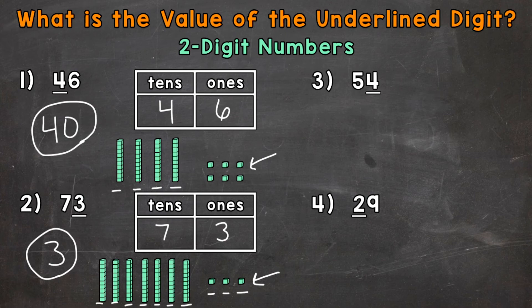Let's move on to number 3 where we have 54. So a 5 in the tens place and then a 4 in the ones. Now the 4 in the ones is underlined. That 4 represents 4 ones. Therefore, it has a value of 4.